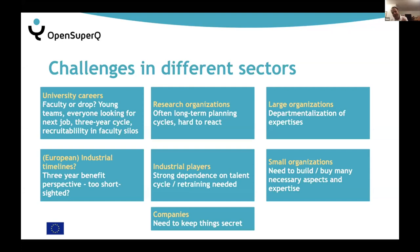In Europe, many industrial projects must show benefit within three years, which is often hard to justify for quantum computing. Research organizations often have long-term planning cycles — my organization's cycle is seven years, so it's very hard to react quickly. Industrial players need to get talent from somewhere, typically universities. Large organizations can have issues with departmentalization, while small organizations often need to buy a lot of things. If you're a small quantum computing hardware startup and need to buy a fridge and a microwave setup, that's a significant basic investment to justify.